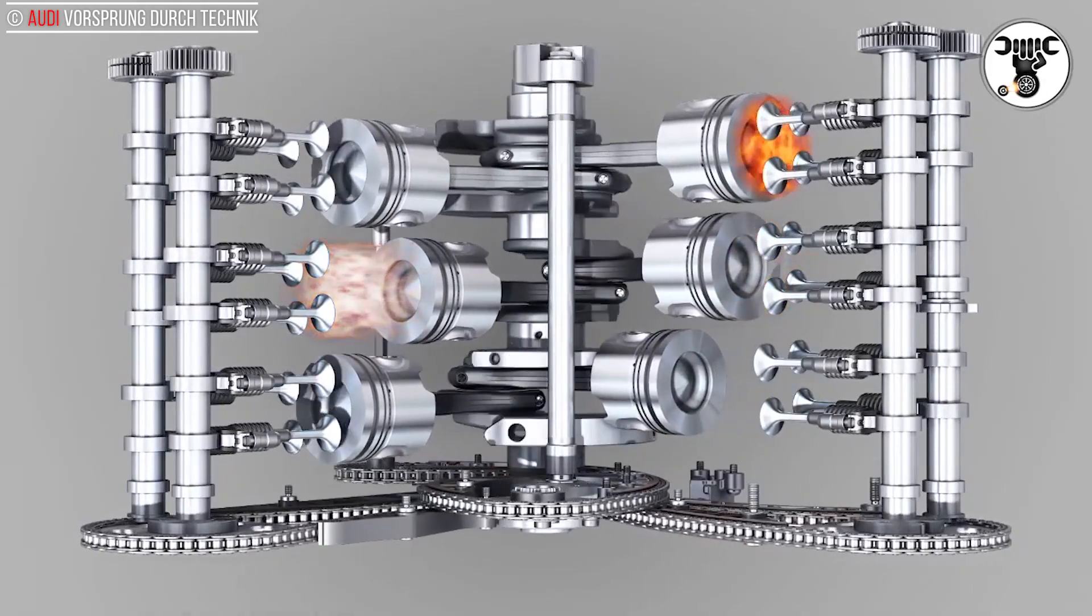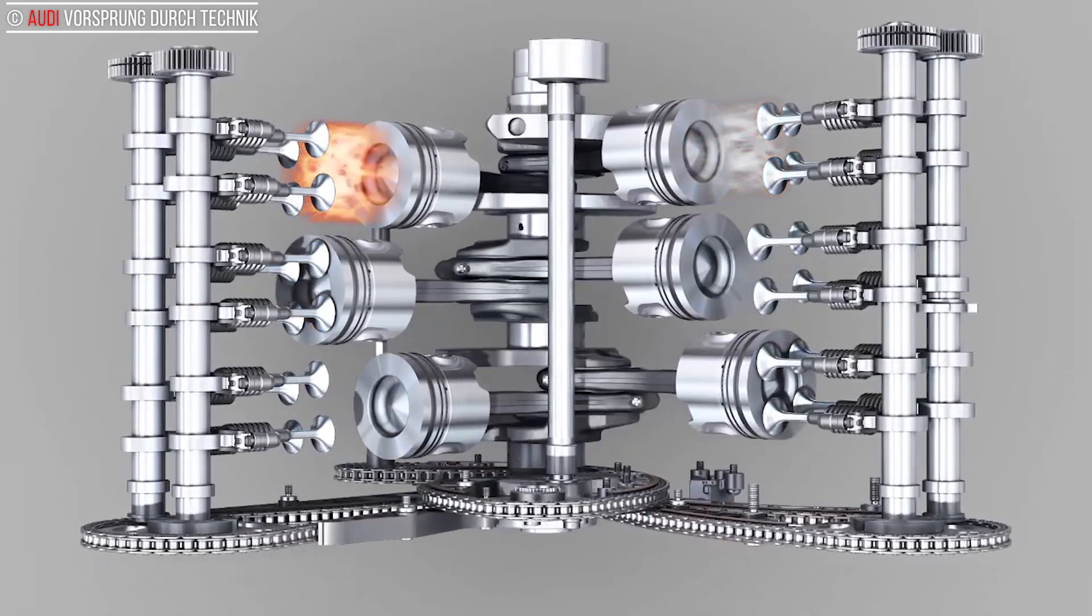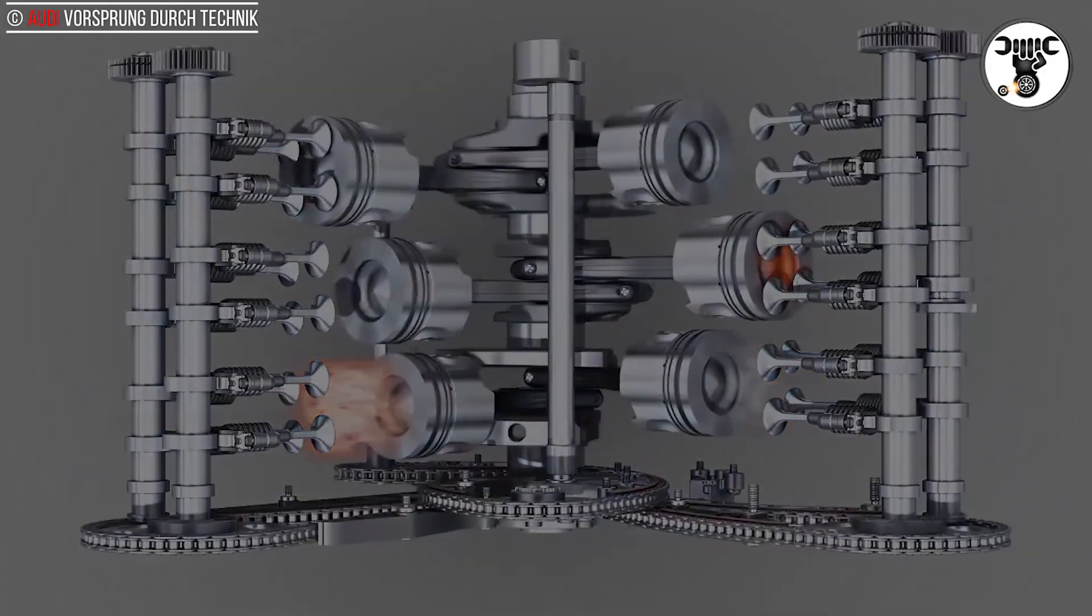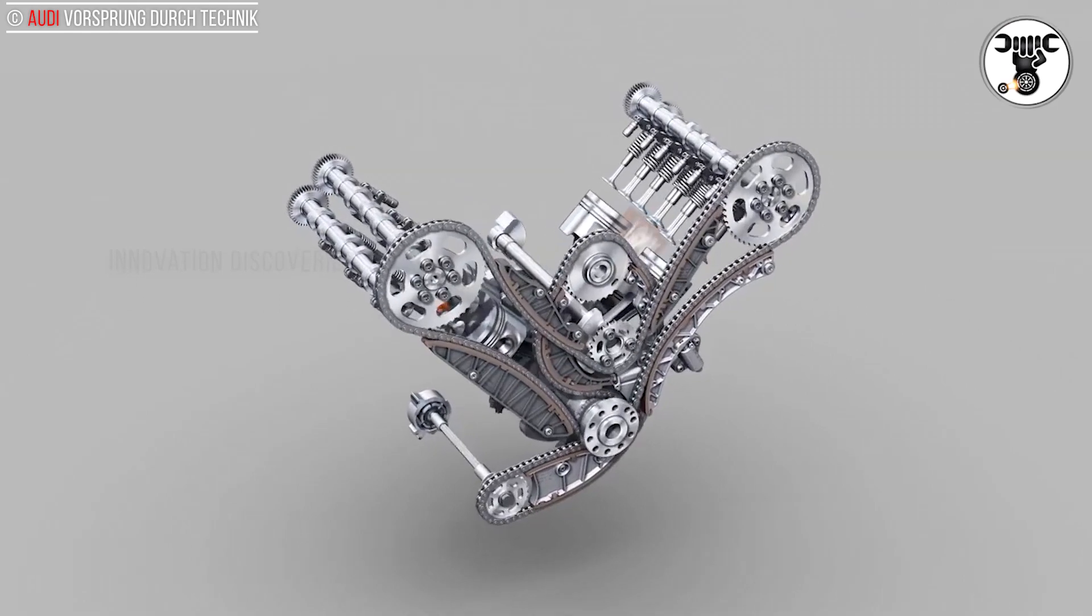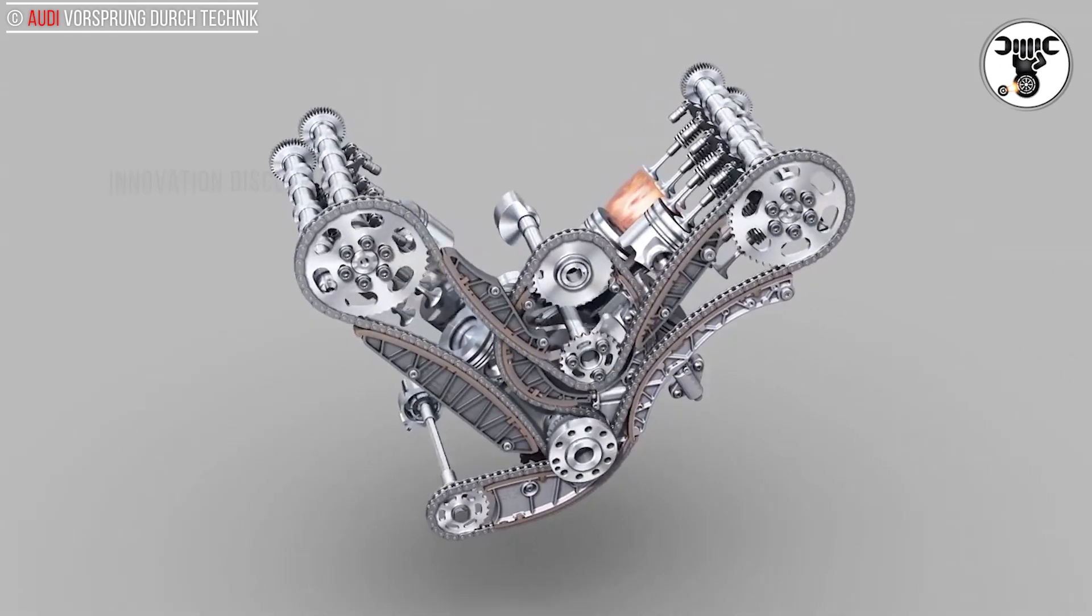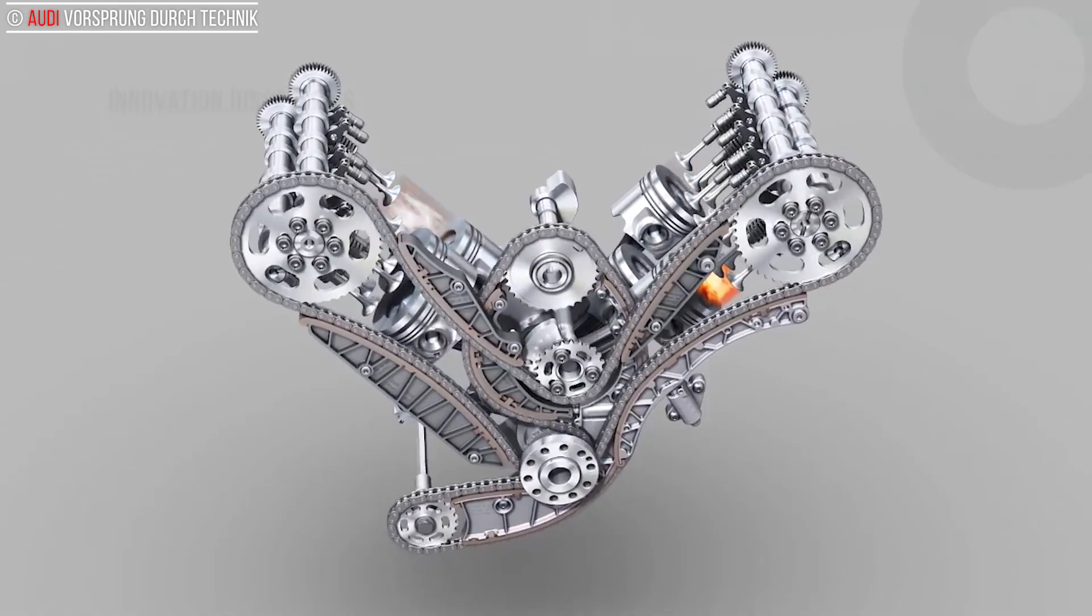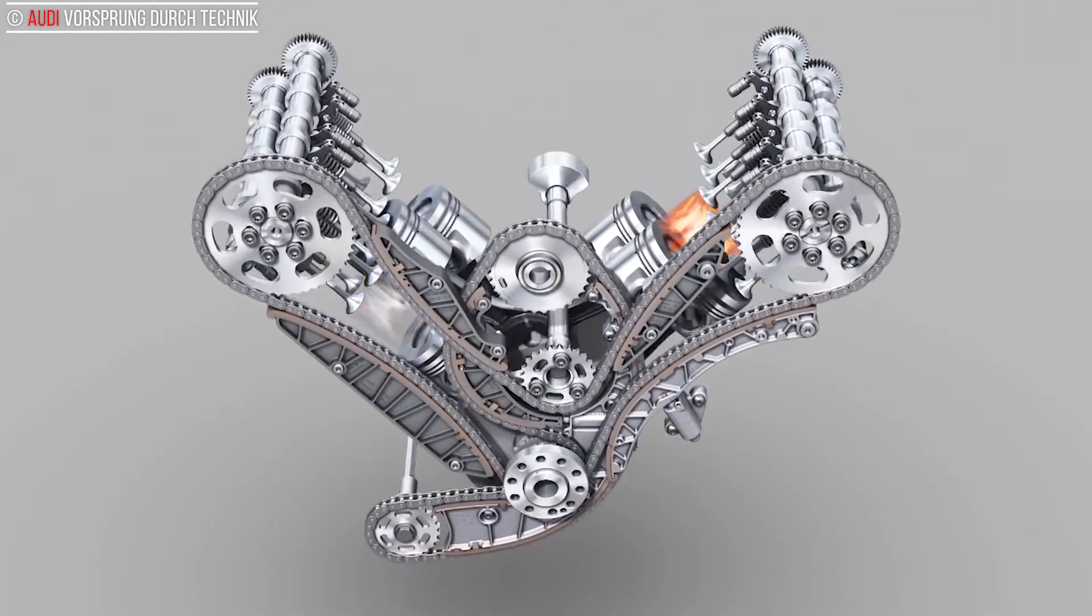In the Audi four-cylinder TDI and the larger four-cylinder gasoline engines, these free second-order inertial forces are eliminated by two balance shafts. Located in the crankcase, they carry counterweights and counterrotate at twice the speed of the crankshaft.